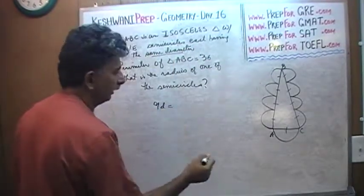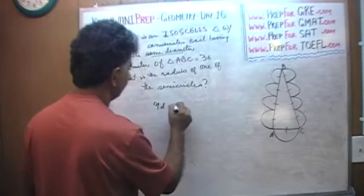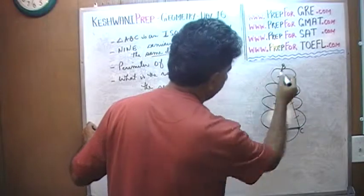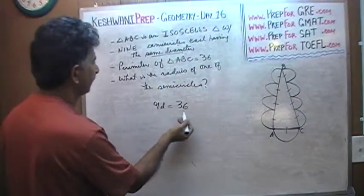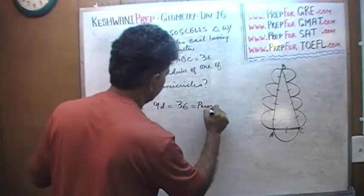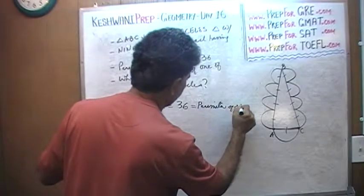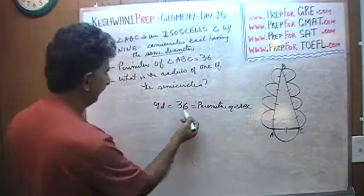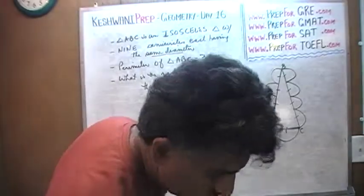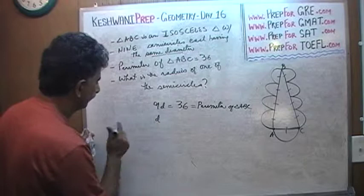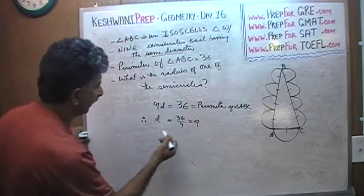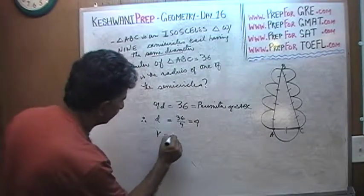So, 9 diameters and the perimeter of the triangle, we are told, is 36. A to C plus A to B and B to C, they all add up to 36. This 36 comes from the fact that the perimeter is 36. This is the perimeter of triangle ABC, and it's made up of 9 diameters. Therefore, each diameter must equal 36 over 9, or 4. If the diameter is 4, then the radius must be 2. That's all.